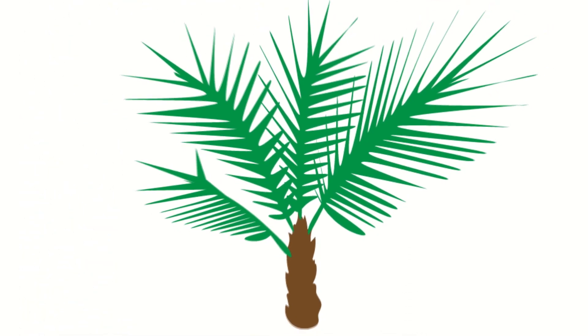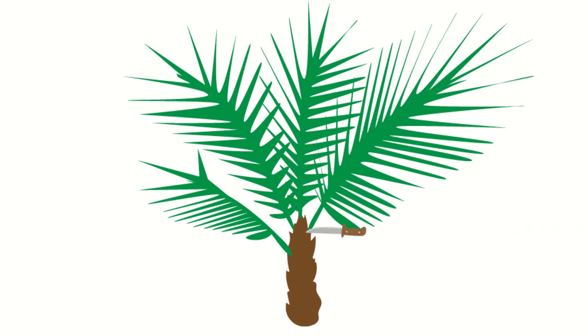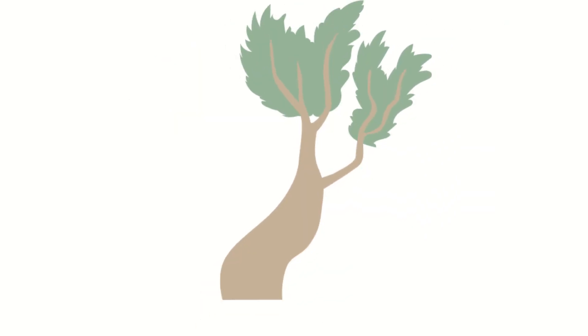Date palm: in order to get water from it, make an incision on the lower branch closer to the trunk, place a container under the stream. Saxo: the bark of this plant absorbs water very well. Do the same thing here.